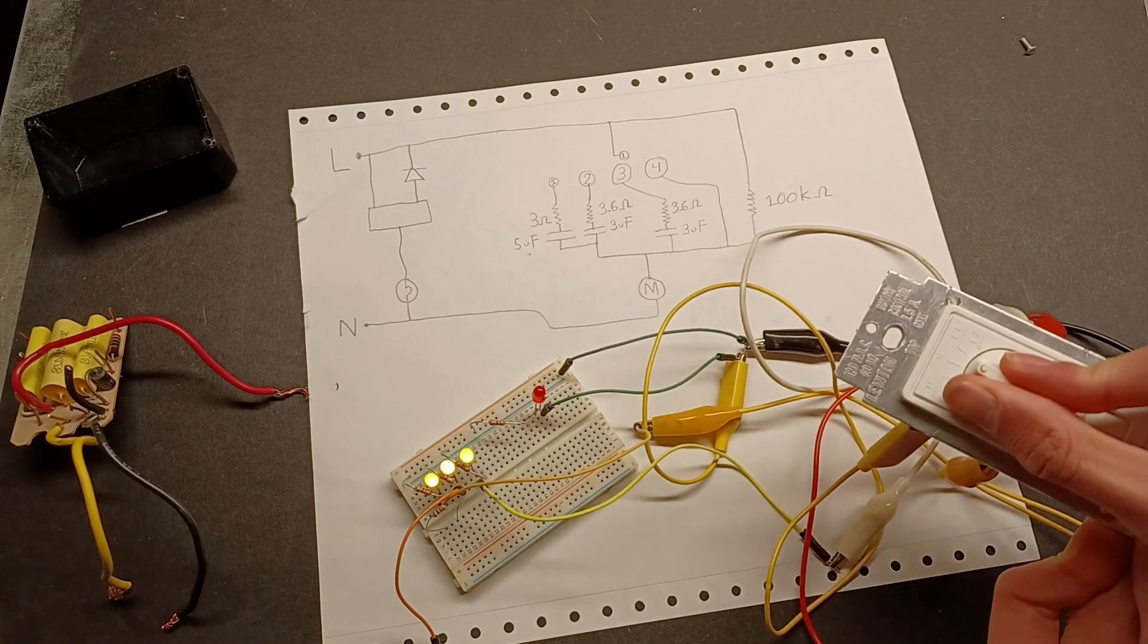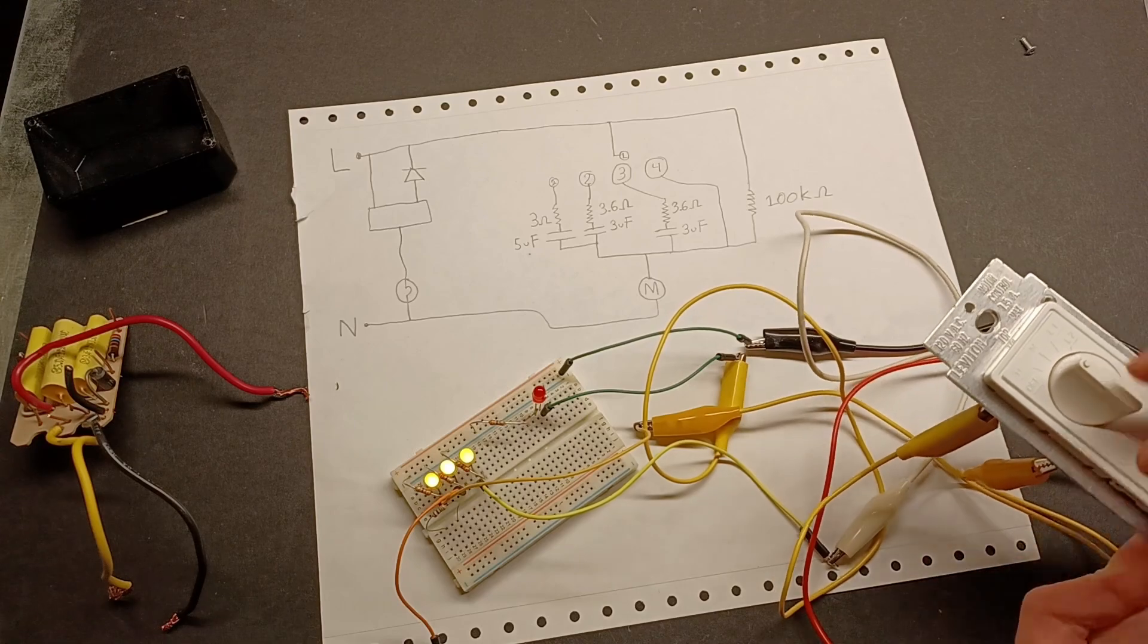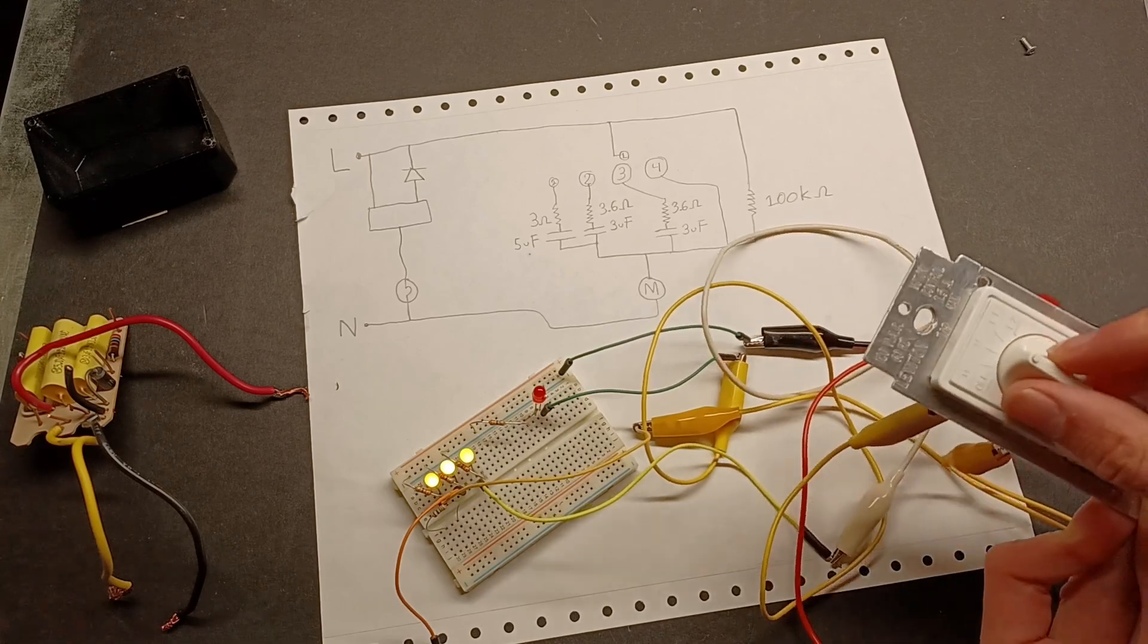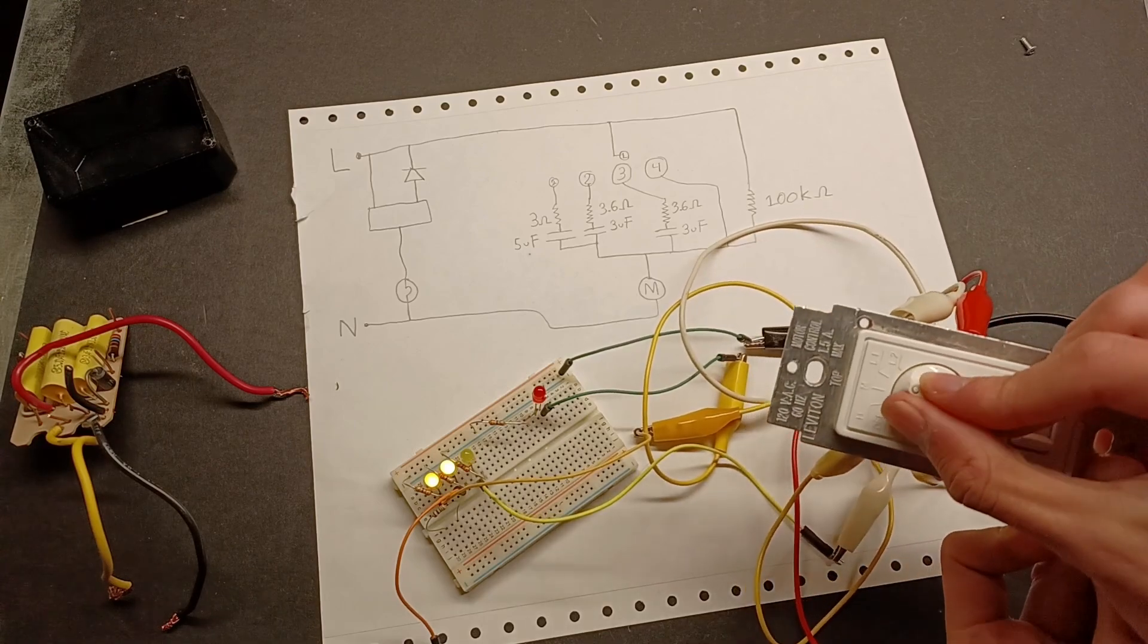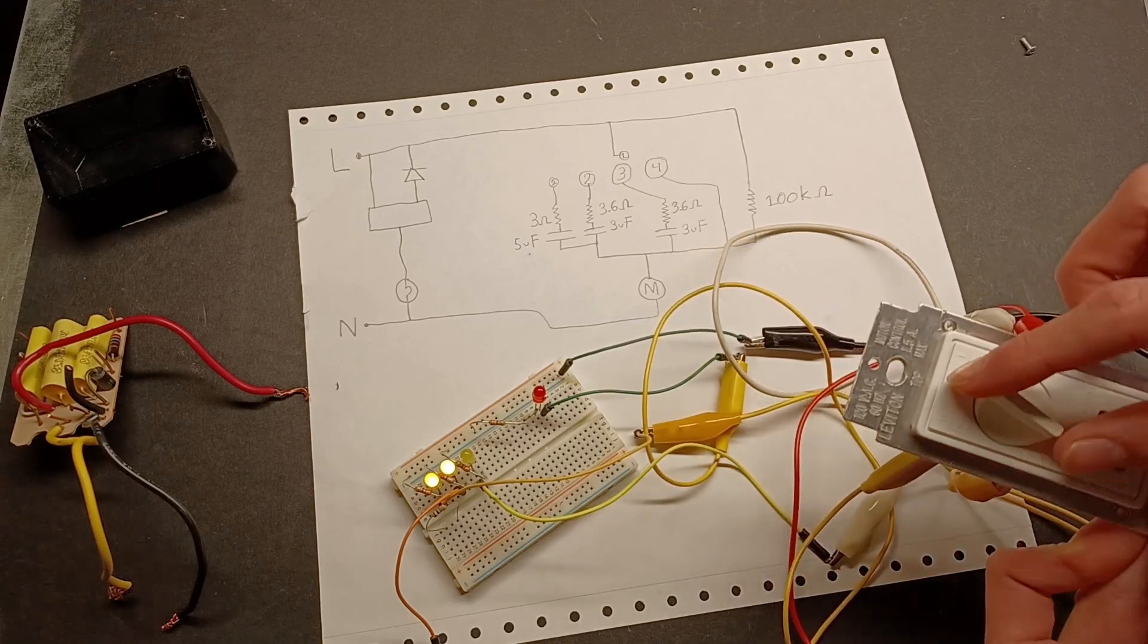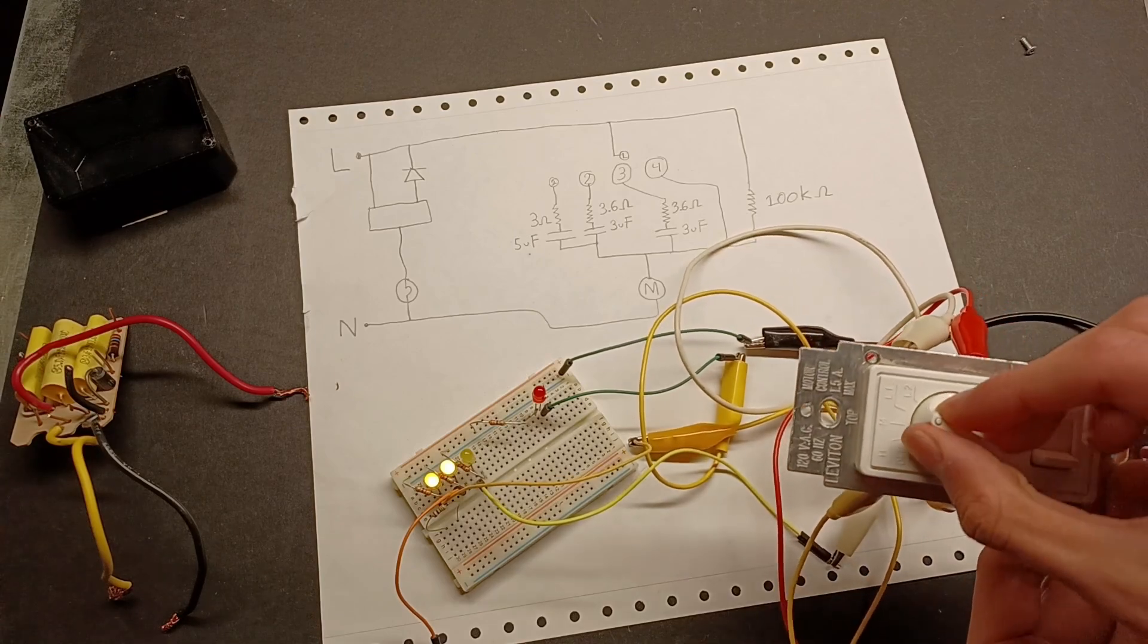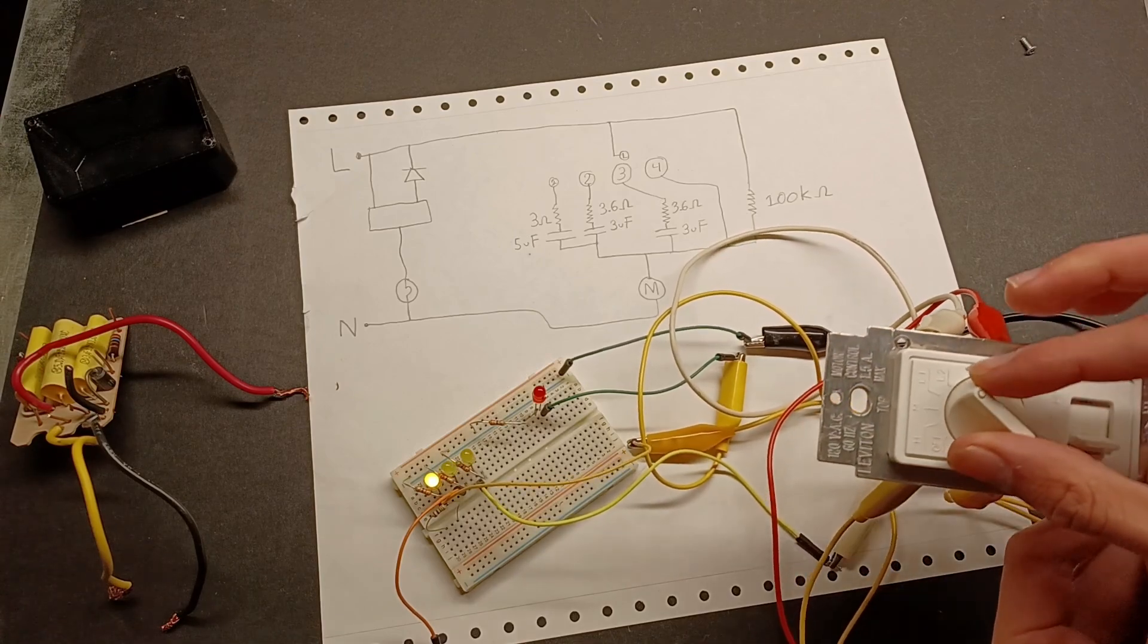If I turn the switch to medium, terminals 1, 2, and 3 all get powered. Turn it to low setting 1. Only terminals 1 and 2 get powered. If I turn it to low setting, only terminal 1 gets power.